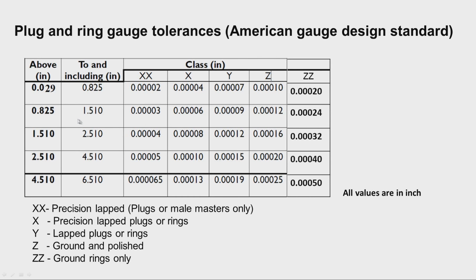This table shows tolerance values in inches for different size ranges. For a size range of 0.029 to 0.825 inch, the XX class tolerance is 0.000002 inch, X class is 0.000004 inch, Y class is 0.000001 inch, and ZZ class is 0.000002 inch. Similarly, for other ranges of sizes, the tolerance values are mentioned in the table.